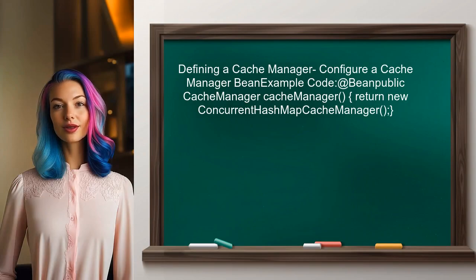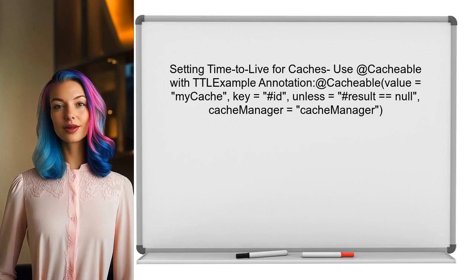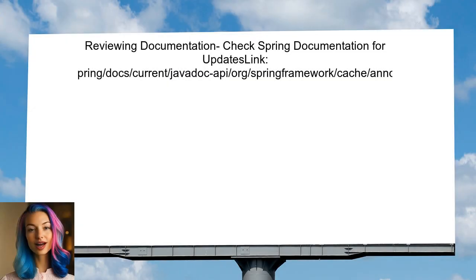The user should explicitly define a cache manager in their Spring Boot application. This can be done by configuring a cache manager bean in the application context. Additionally, the user can set a specific time-to-live for their caches by using the appropriate annotations or configuration properties, ensuring that cached data is refreshed after a certain period. Finally, the user should review the Spring documentation for any updates or additional features related to caching, to stay informed about best practices and new capabilities.